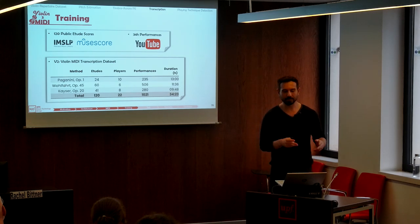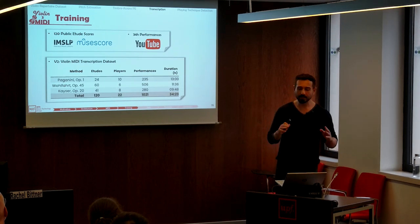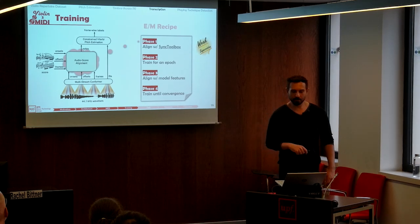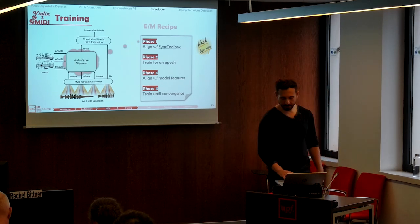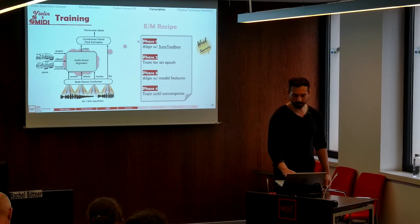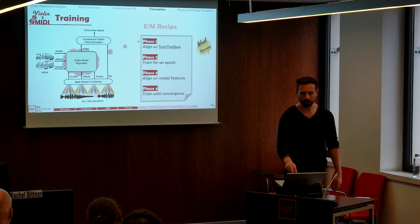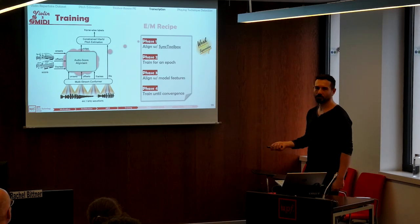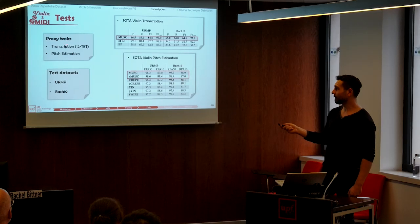For finer pitch band tracking, we first use higher frequency resolution, then utilize Viterbi pitch tracking within constraint regions corresponding to the note event. We trained this model using version two of the dataset — the violin MIDI transcription dataset — consisting of 120 scores and 34 hours of YouTube recordings. But these scores and performances come from different sources, so they are not aligned, and we use an expectation maximization approach to train the model using these unaligned pairs. It consists of four stages: generating fuzzy labels by conventional audio-score alignment from the sync toolbox, training the network with these labels, creating finer alignments using the new model's features, and finally training on this data until convergence. It's like a very old-school HMM-GMM applied to our context where labels are scarce.